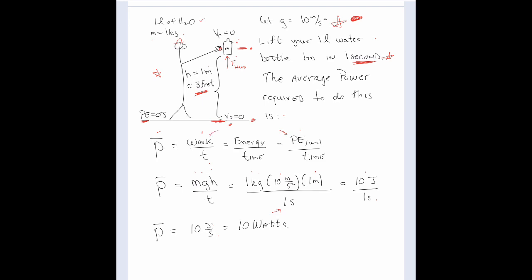Average power is work per time. The work done by you changes the potential energy. The final potential energy is just mgh — mass times 10 times one meter — done over one second. So the average power produced by you is 10 joules per second, which is 10 watts. You generated 10 watts just to lift your one-liter water bottle three feet. That gives you an idea of what one watt is.